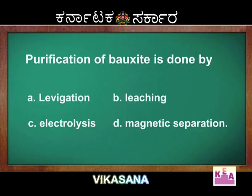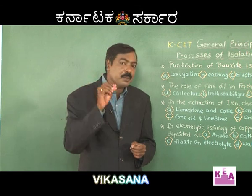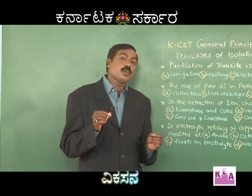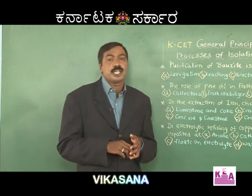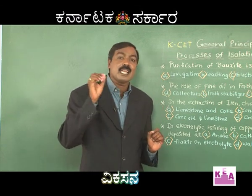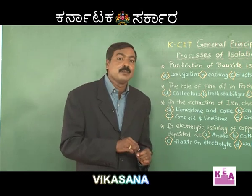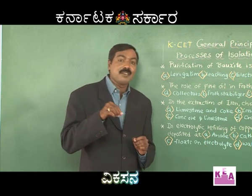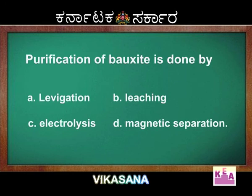The purification of bauxite is done by — the options given are leaching, electrolysis, and magnetic separation. In concentration of the ore, the first method is gravity separation, hydraulic washing, or lavigation. This method is employed if the impurities are lighter in nature. If the impurities are lighter in nature, the method employed is hydraulic washing, gravity separation, or lavigation.